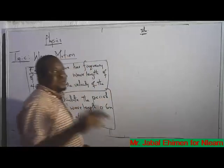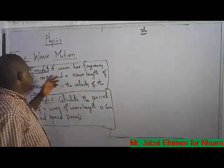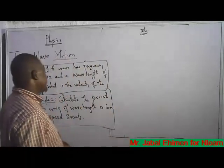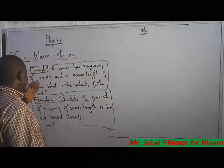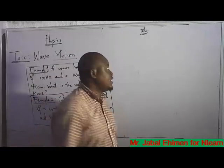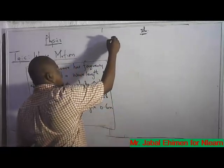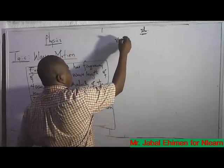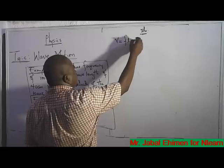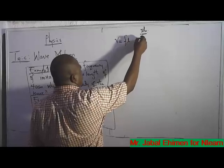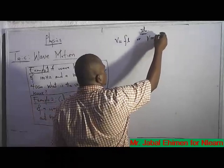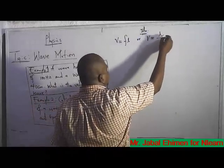Now back to the wave equations. Let's talk about some examples that have to do with the wave equation. Remember that the wave equation states that V is equal to F lambda, or V is equal to lambda over T.